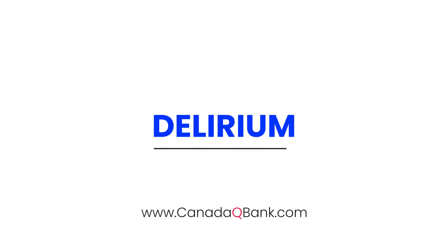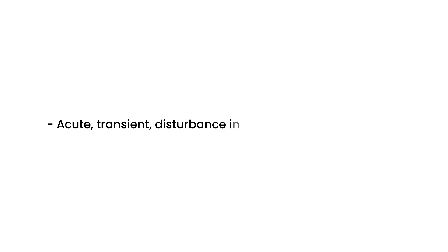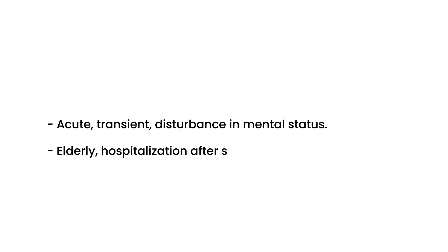We will discuss delirium in this video. Delirium is a condition that can occur acutely — it's a temporary, transient condition that essentially happens in elderly patients, in which they have a disturbance in their mental status. A typical scenario is an elderly patient placed in the hospital for something, and then all of a sudden they develop this acute change in mental status, usually after a surgery or any type of condition.